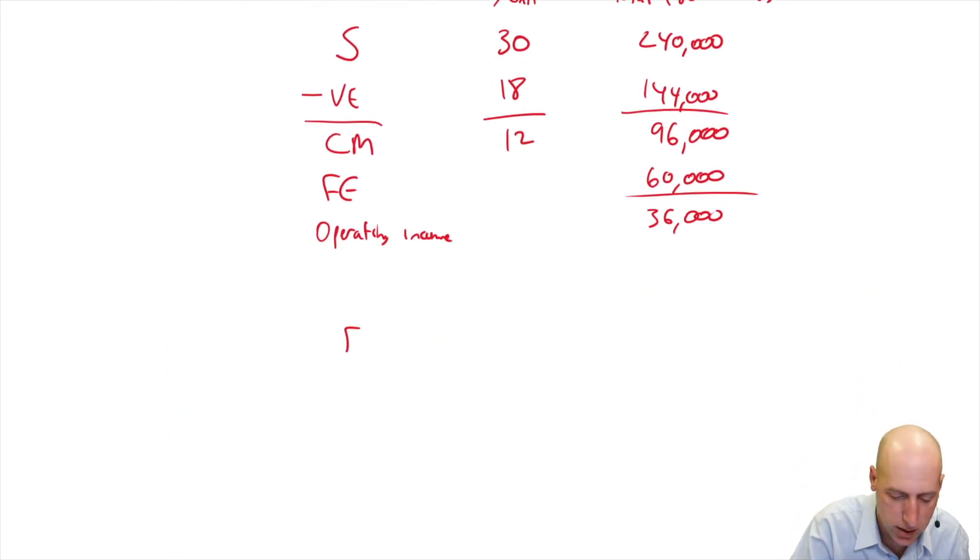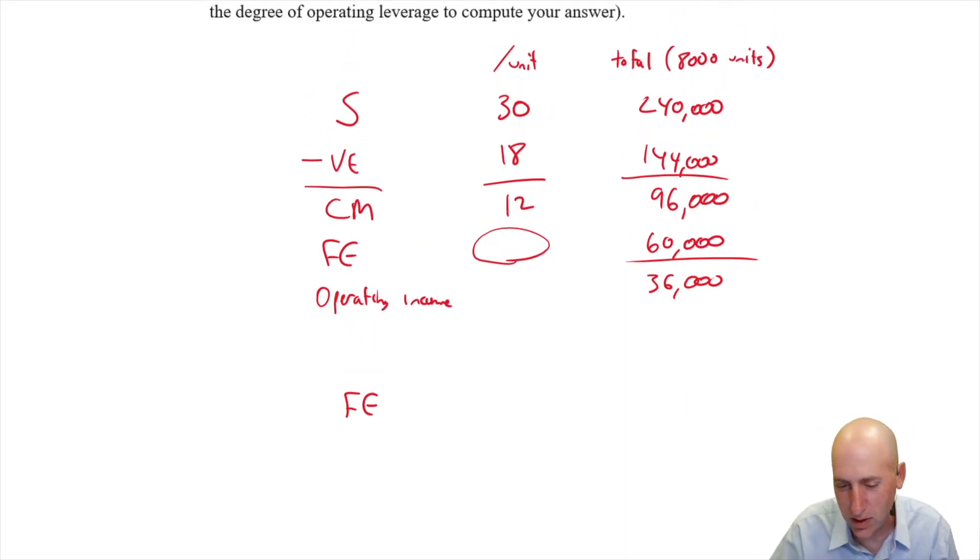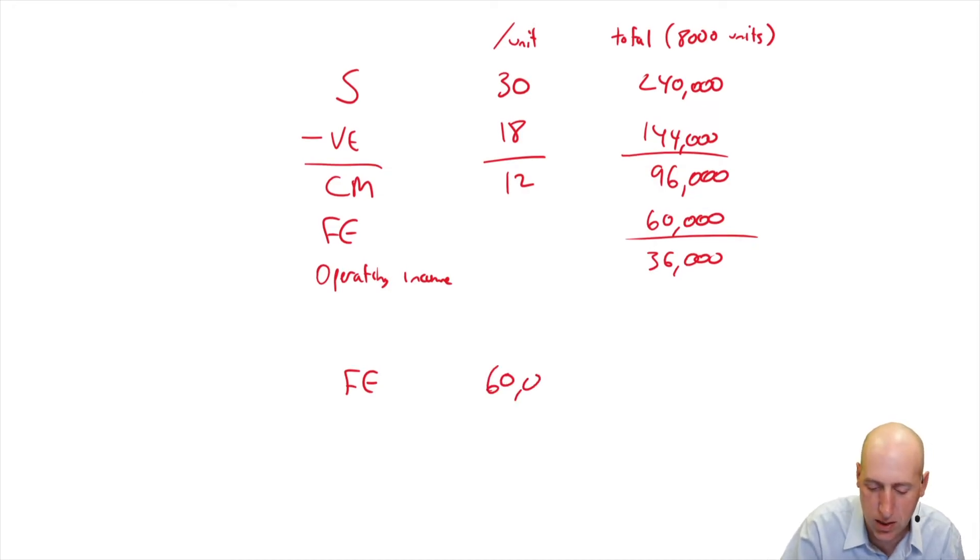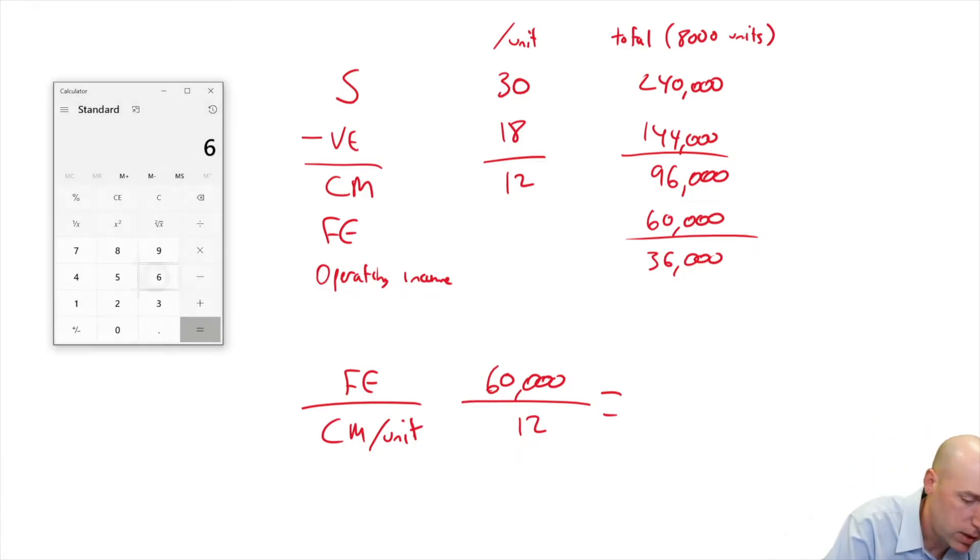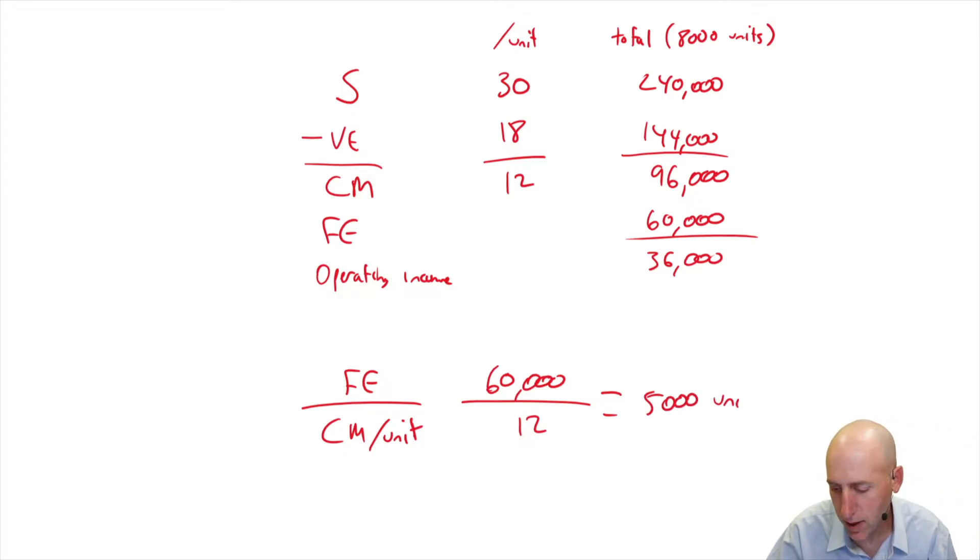So we know our fixed expenses. You'll notice actually, we don't do fixed expenses per unit. It doesn't make sense because they're fixed. It doesn't matter how many units I sell. If I sold not 8,000 but 10,000 units, my fixed expense per unit would change. So it doesn't make any sense to do it on a per unit basis. In any event, our fixed expenses are $60,000 divided by CM per unit, and it's going to give us our break-even unit. Our CM per unit is $12. $60,000 divided by $12. I've lost my calculator now. Where did I put it? There it is.